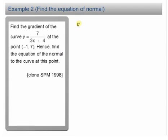We have an equation y equals 7 over 3x plus 4. The first part, we need to find the gradient of the curve at the point (-1, 7). Gradient is actually dy/dx. The second part, we have to find the equation of normal. You have to use the formula y minus y1 equals gradient of normal times x minus x1.